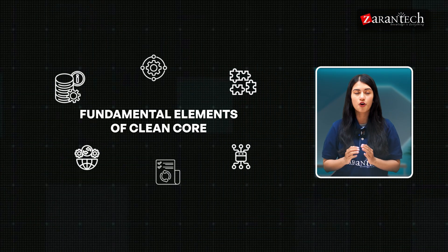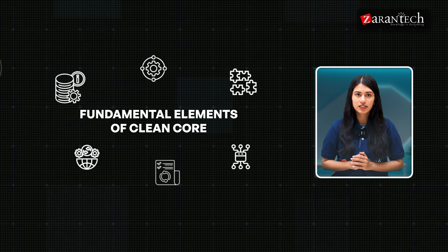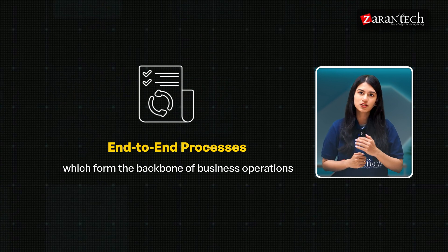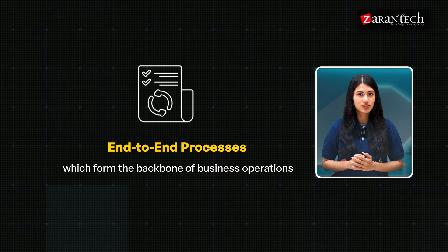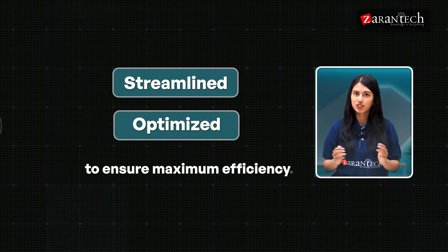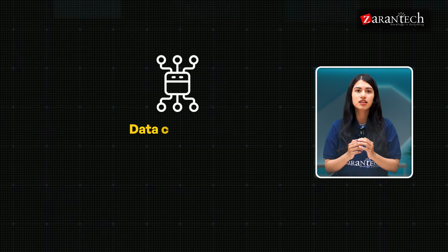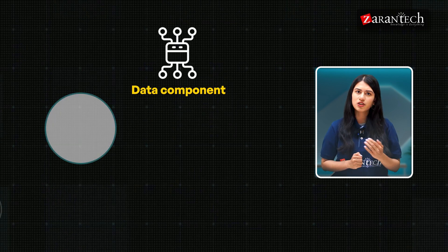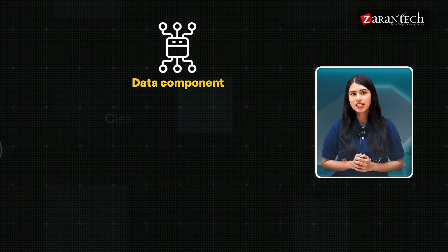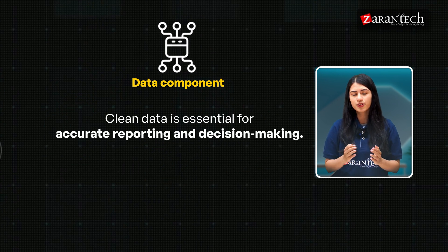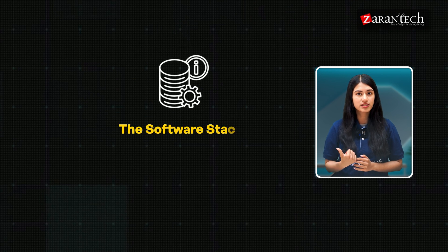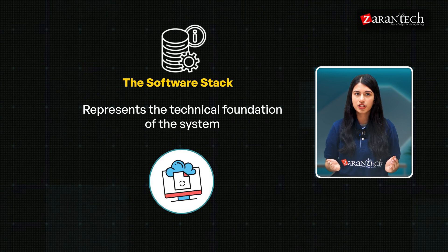At the heart of clean core are the end-to-end processes, which form the backbone of business operations. These processes must be streamlined and optimized to ensure maximum efficiency. Equally important is the data component, which includes transactional, master, and configuration data. Clean data is essential for accurate reporting and decision making.